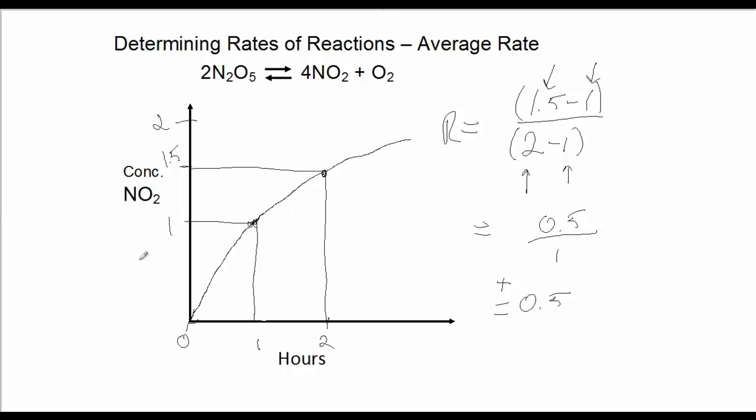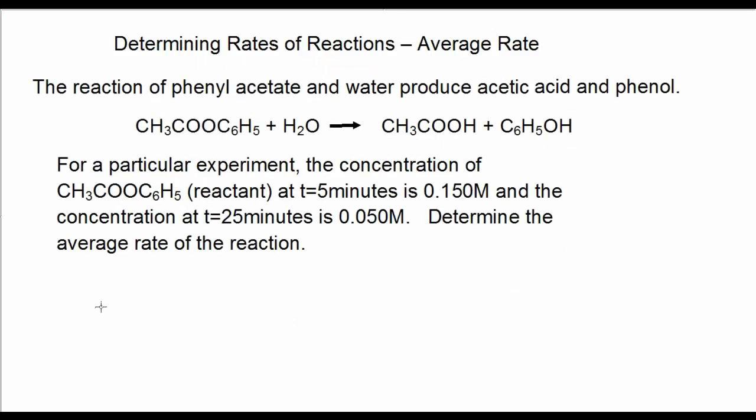Next, I'd like you to try a few problems. Here's a problem I'd like you to try. The reaction of phenyl acetate in water produces acetic acid and phenol. For a particular experiment, the concentration of phenyl acetate, this reactant, at T equals 5 minutes is 0.15 molar. The concentration later, at 25 minutes, decreases to 0.05 molar. Determine the average rate of the reaction.